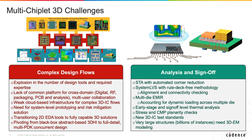On the analysis side, lots of challenges. System LVS: many people get halfway through their design and only then start thinking about how they're going to do LVS at the system level — making sure everything's aligned and connected through the system. System LVS thought of halfway through the design cycle is a little too late. You need to think about it when you start your design so that you have that golden netlist source to drive it.